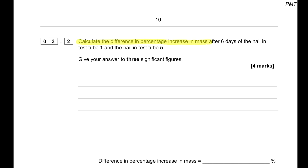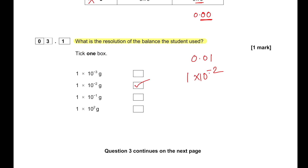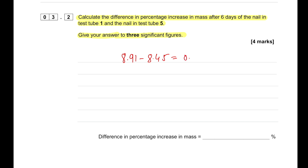Calculate the difference in percentage increase in mass after six days for the nail in test tube 1 and test tube 5, giving the answer to three significant figures. For test tube 1: 8.91 − 8.45 = 0.46. Then 0.46 ÷ 8.45 × 100% = 5.44%. This is for test tube 1.